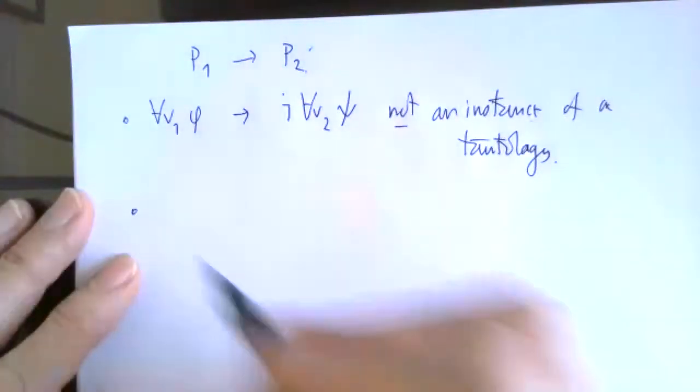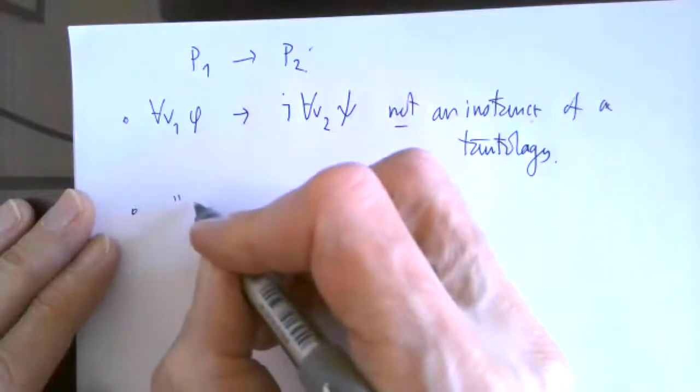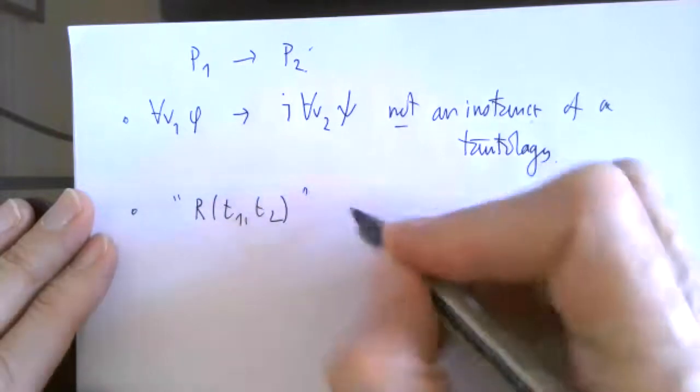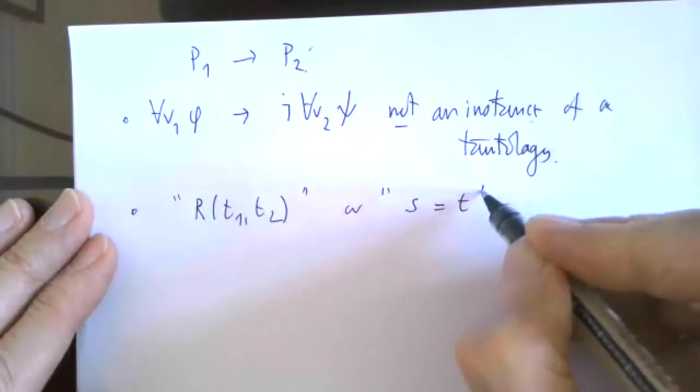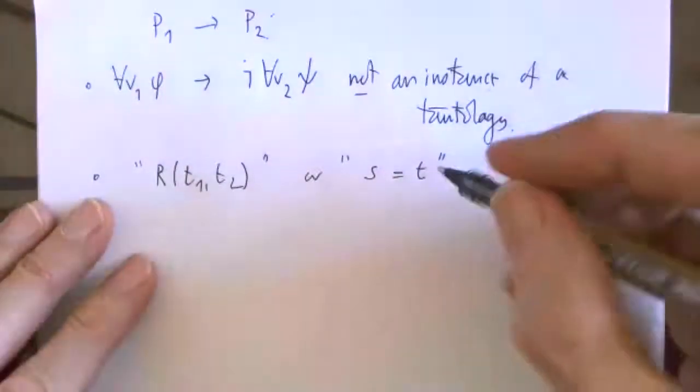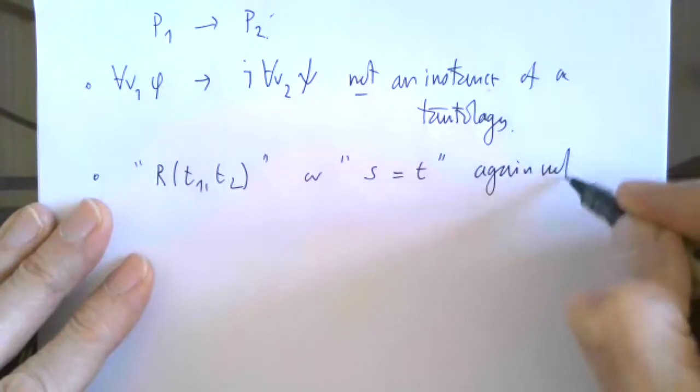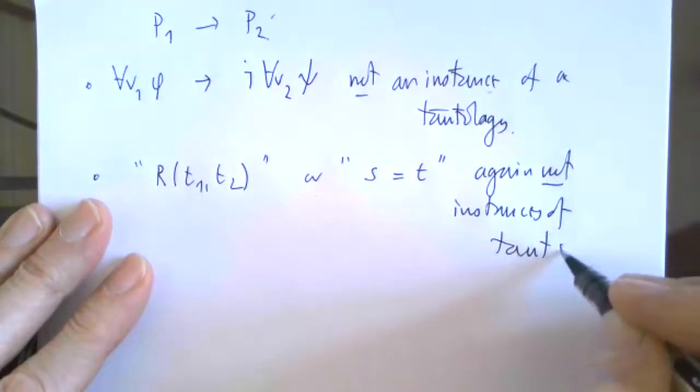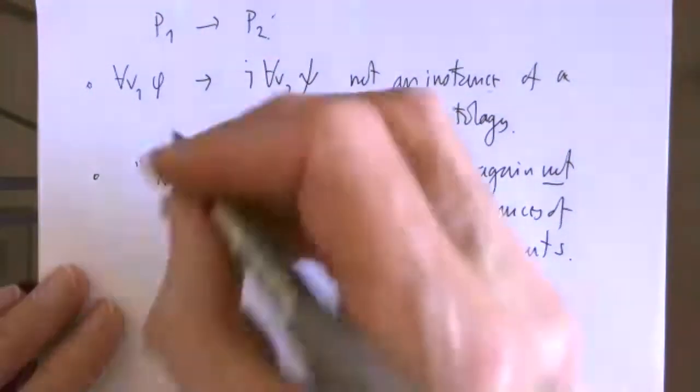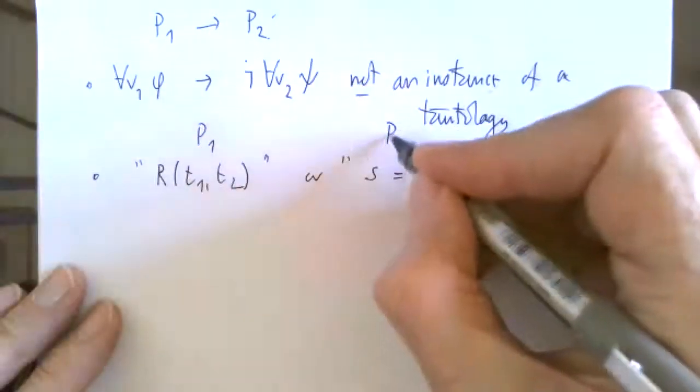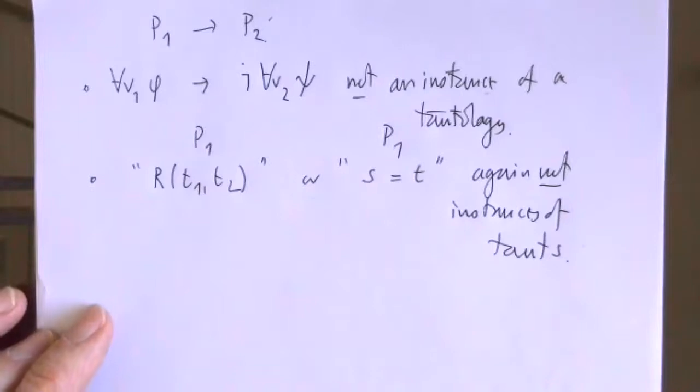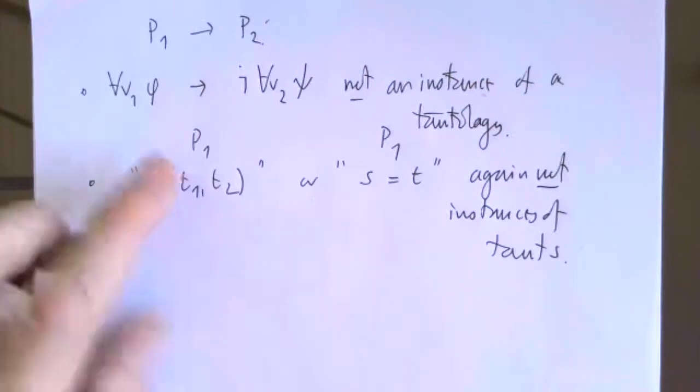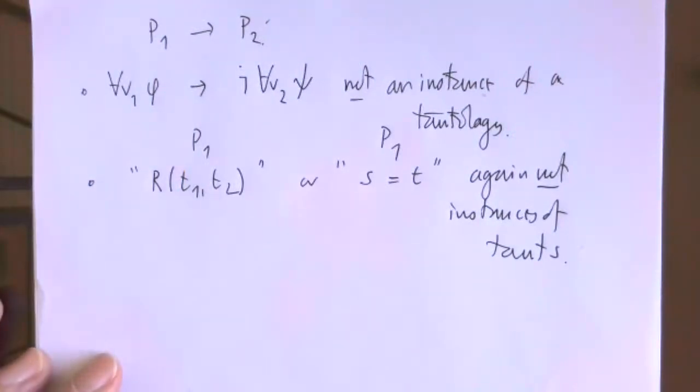Nor can any atomic formula, like R(t1,t2) or s equals t, be instances of tautologies. At most I could think of this as just being some p1 by itself, but this isn't a tautology because it can be false sometimes.